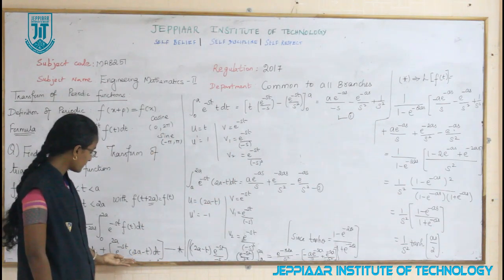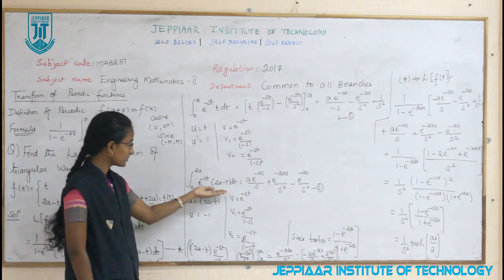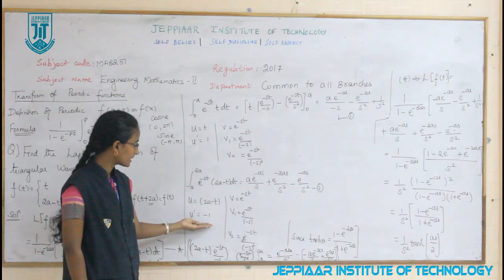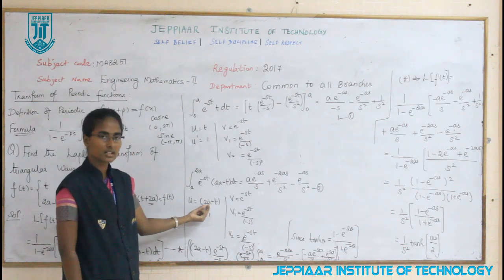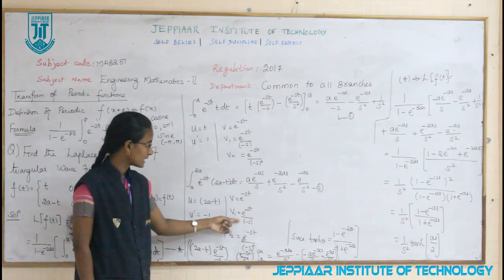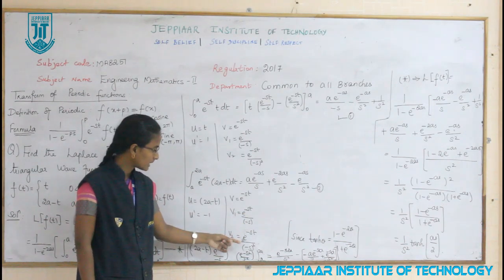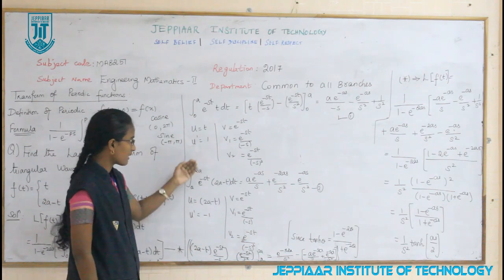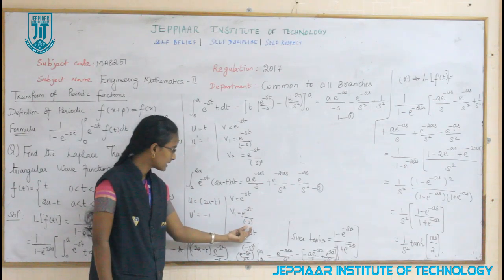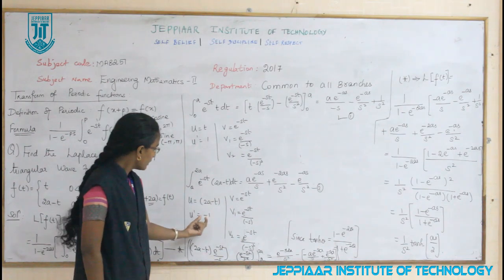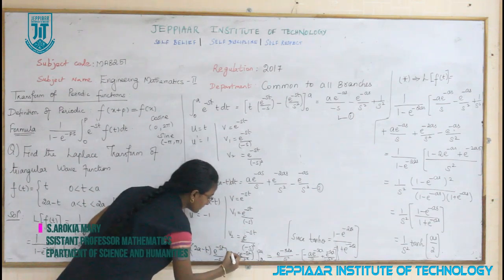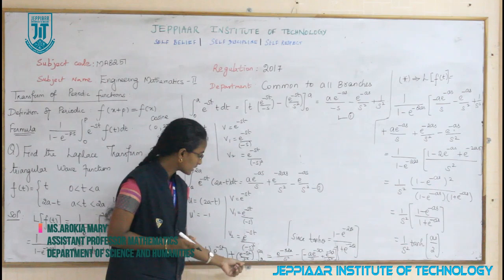Now integrating the second term: e^(−st)·(2a − t) from a to 2a. We again use Bernoulli's formula. Setting u = 2a − t, the derivative of 2a is 0 and the derivative of −t is −1, so u′ = −1. Integrating e^(−st) gives e^(−st)/(−s), and integrating again gives e^(−st)/(−s²). Applying u·v₁ − u′·v₂: (2a − t)·e^(−st)/(−s) minus (−1)·e^(−st)/(−s²). Since minus times minus is plus, we get (2a − t)·e^(−st)/(−s) + e^(−st)/s².